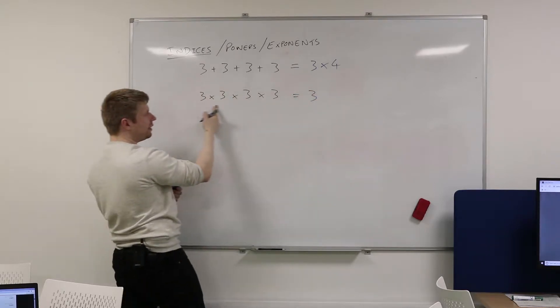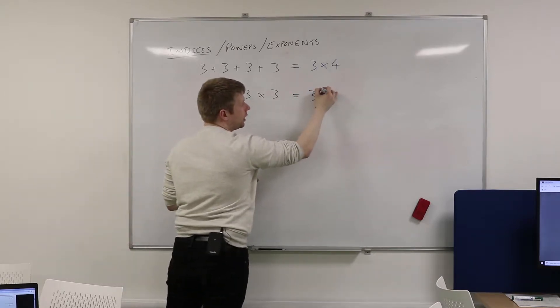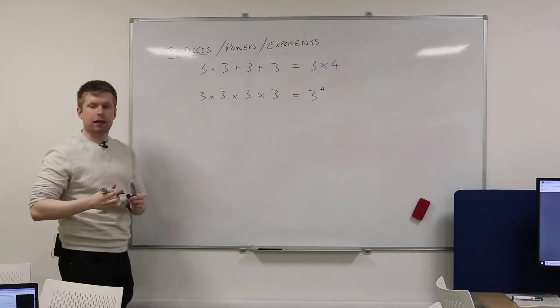So you'd say there's 3, because that's the number which I'm multiplying, and I'm doing it 4 times, so I'm multiplying it together 4 times.